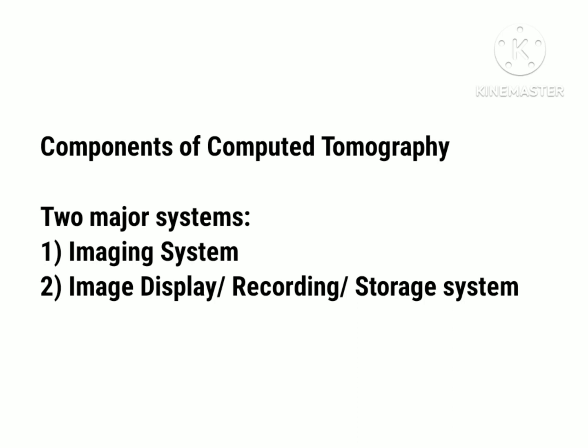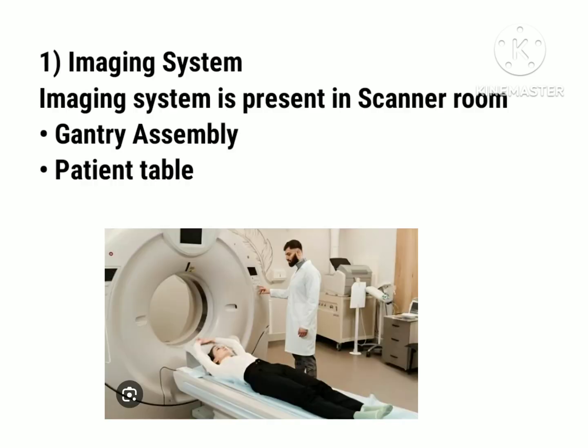In the components of computer tomography there are two major systems that work together to complete the scanning process in CT scanner. First one is the imaging system. Second one is the image display, recording and storage system. The imaging system is present in the scanner room, where the patient's body is being scanned under the CT scanner, and in the scanner room there is the gantry assembly and the patient table.